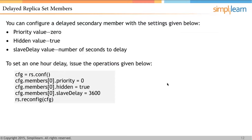To set a one-hour delay, you configure it as follows: set config equal to rs.conf(), then set config.members[0].priority to 0, config.members[0].hidden to true, and config.members[0].slaveDelay to 3600. After making configuration changes, you call rs.reconfig() to apply them.